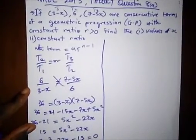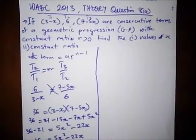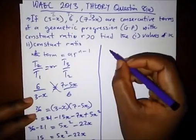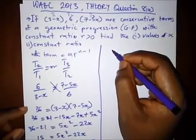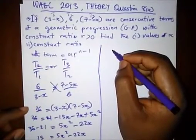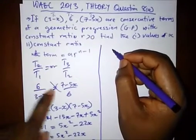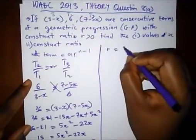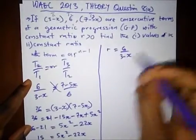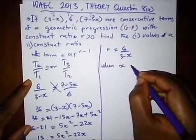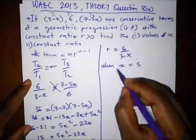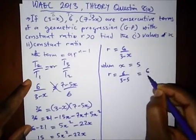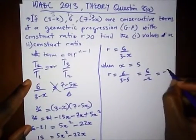The second question says find the constant ratio. We'll find it when x equals 5 and when x equals minus 3 over 5. The constant ratio r equals 6 over (3 minus x). When x equals 5, r equals 6 over (3 minus 5), that's 6 over minus 2, which gives us minus 3.